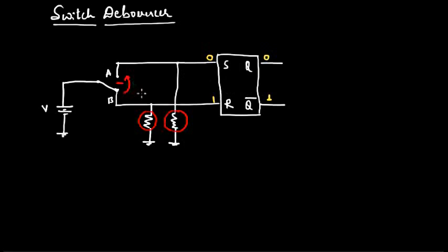When center contact of the switch starts moving from point B to point A, and because of these two pull down resistors, we will have 0 and 0 at S and R. When both the inputs to S and R are 0, that means the current state is maintained. There won't be any change at the output.